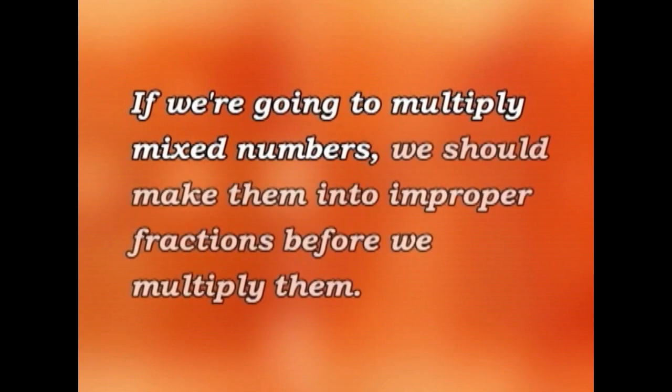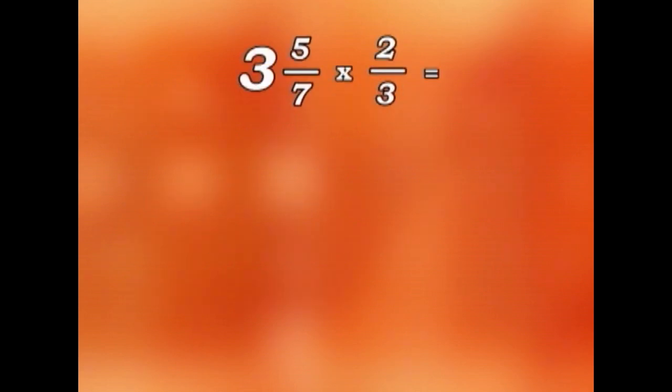If we're going to multiply mixed numbers, then we should make them into improper fractions before we multiply them. 3 and 5 sevenths multiplied by 2 thirds. Well, first we must make 3 and 5 sevenths into an improper fraction.